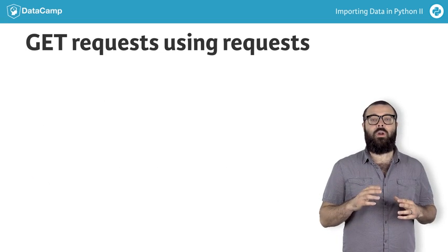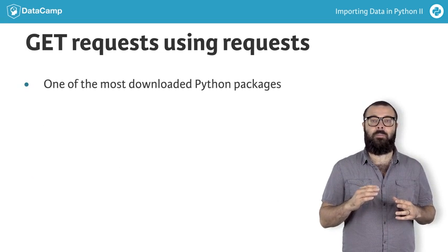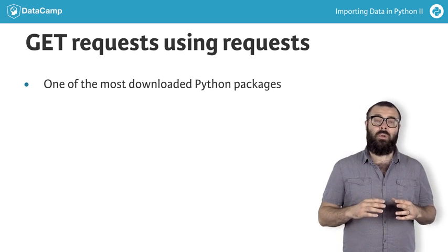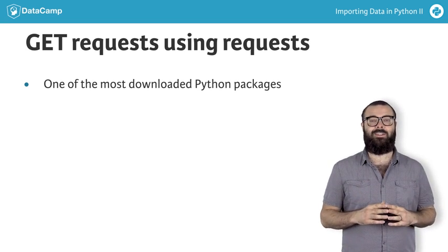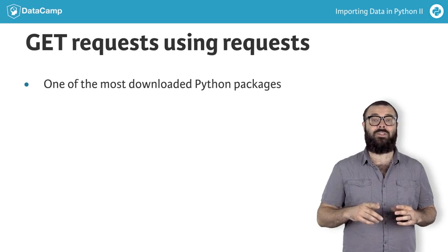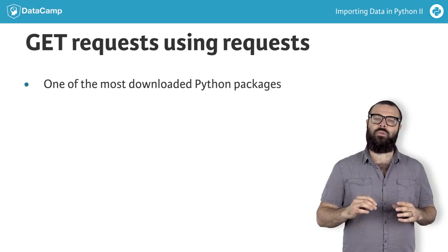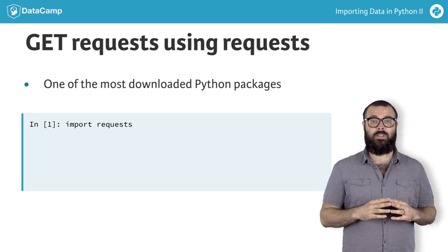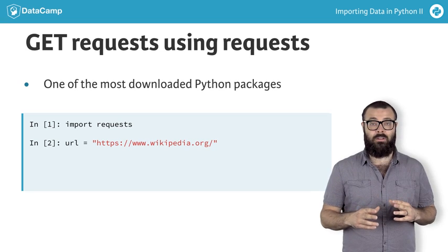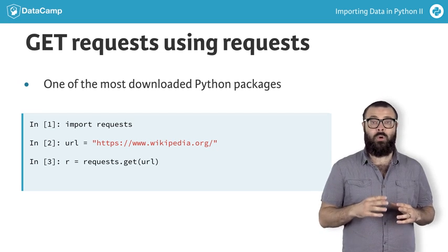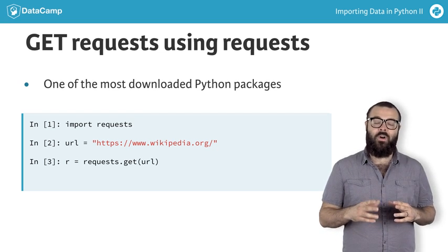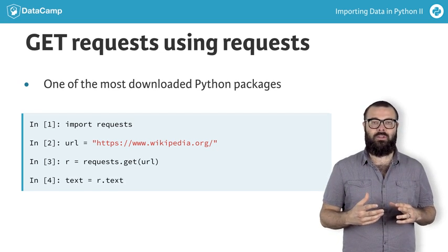Moreover, requests is one of the most downloaded Python packages of all time, pulling in over 7 million downloads every month. All the cool kids are doing it. Let's now see requests at work. Here you import the package requests, specify the URL, package the request, send the request, and catch the response with a single function, requests.get. And finally, you apply the text method to the response, which returns the HTML as a string.